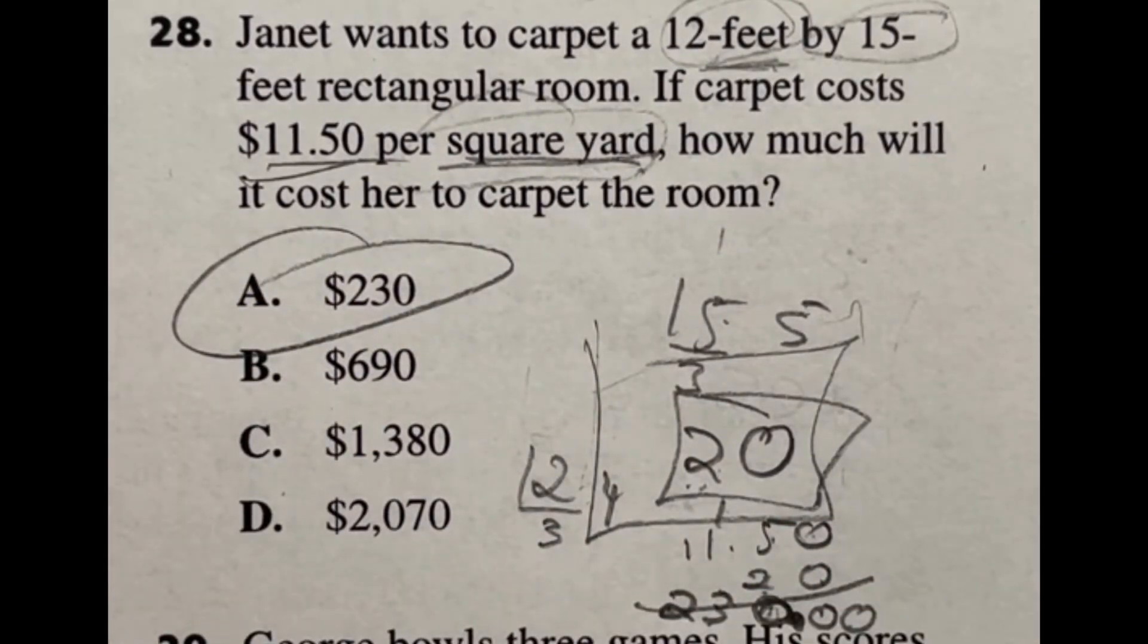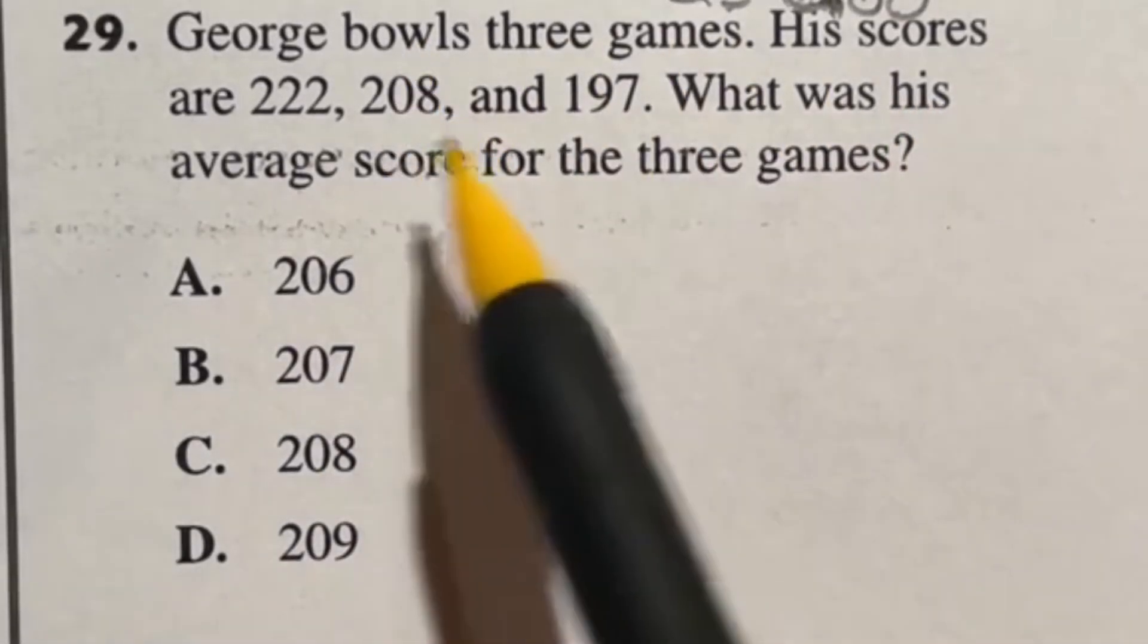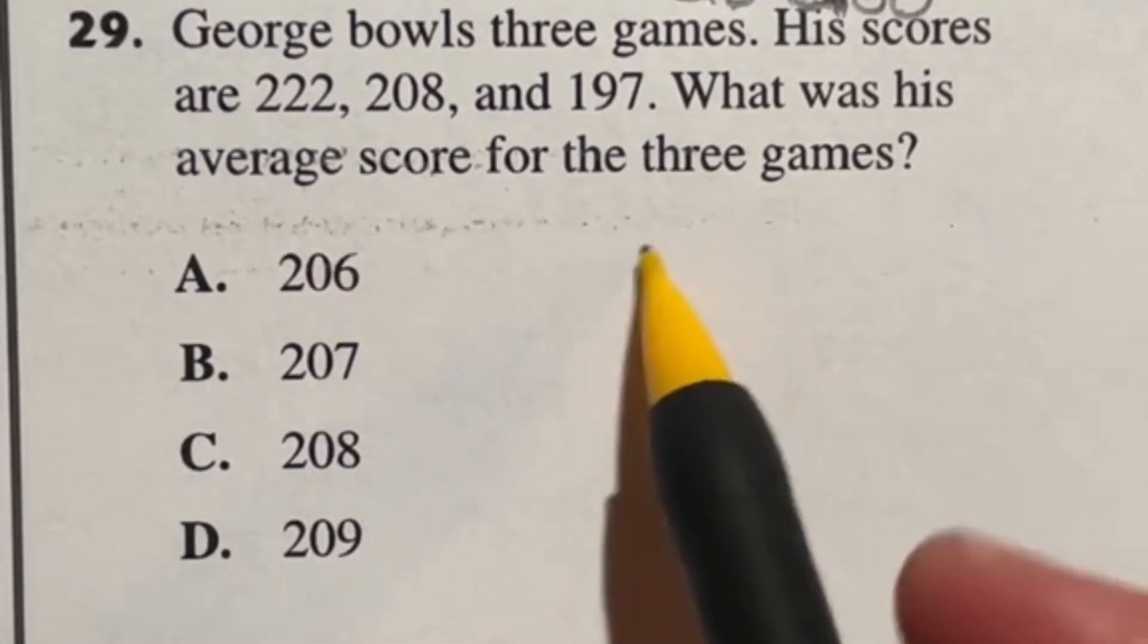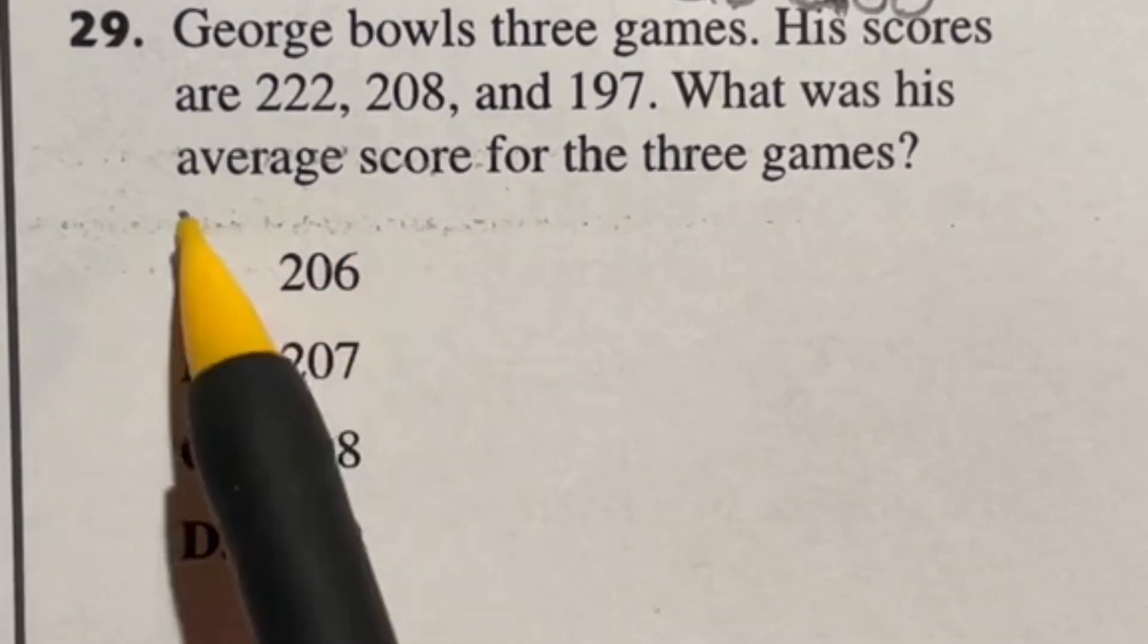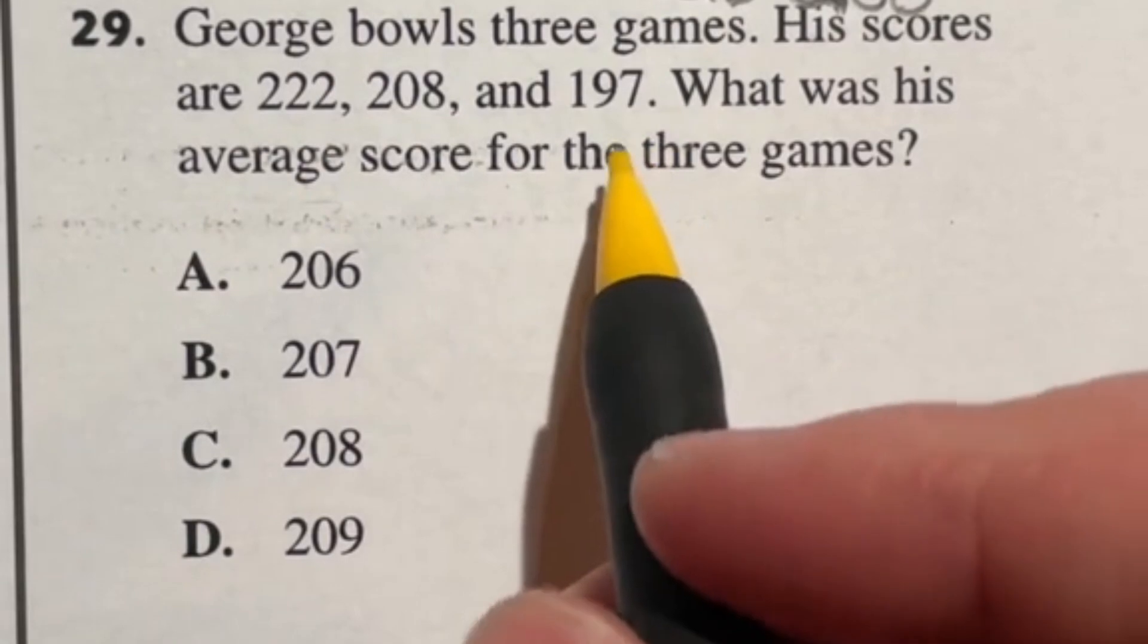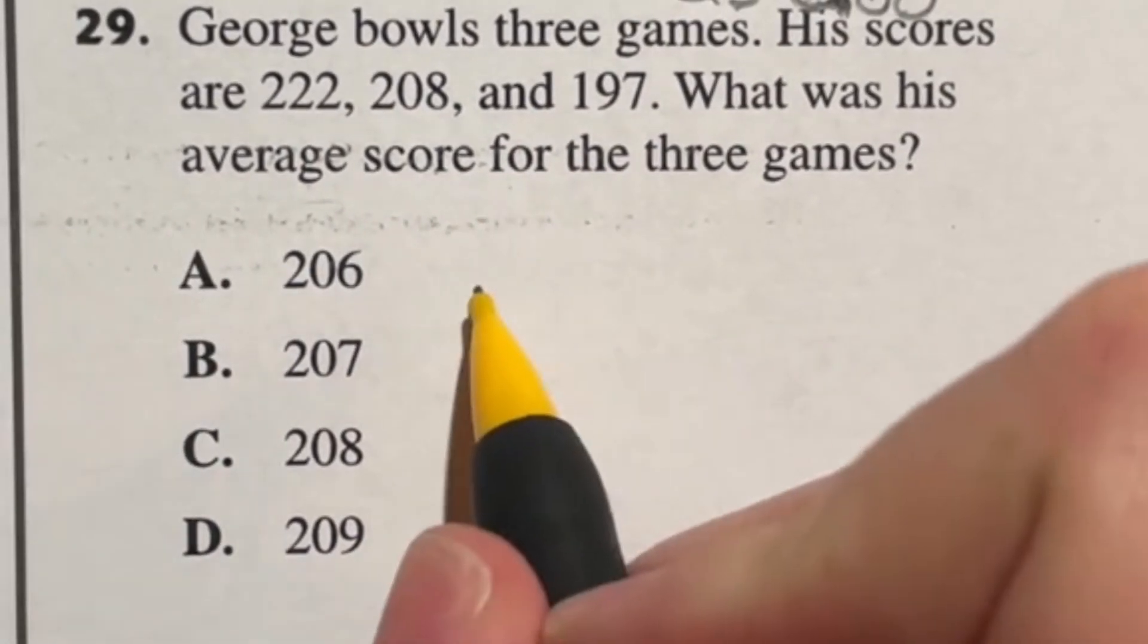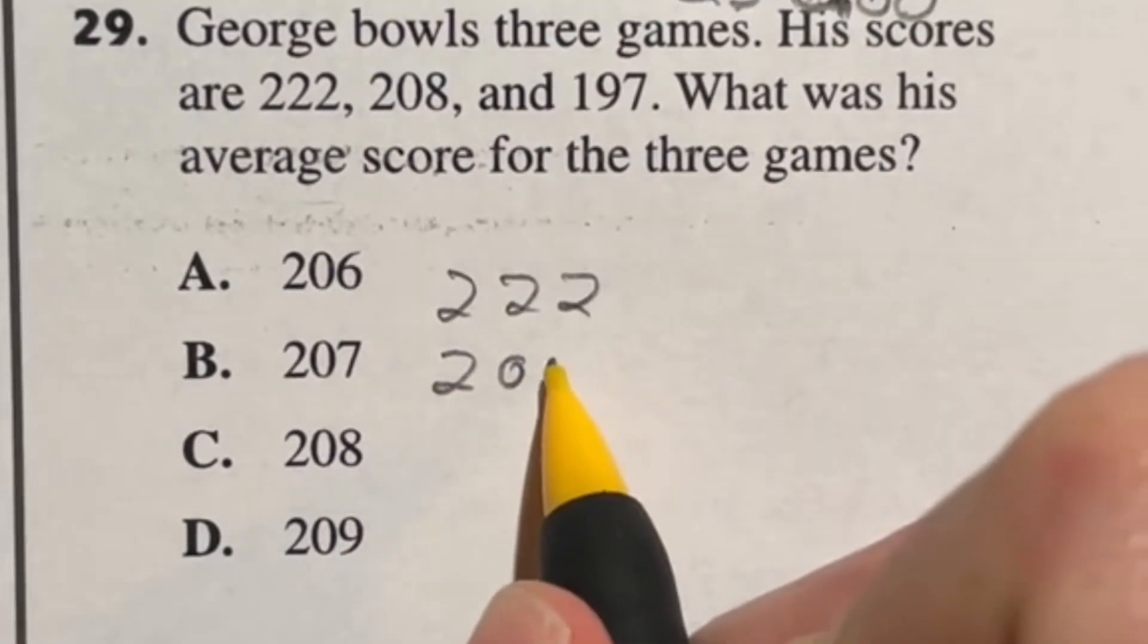Number 29 says George bowls three games. His scores are 222, 208, and 197. What was his average score for the three games? Remember, average is one of our three measures of center—mean, median, mode. Average is the mean. This is where you add your numbers together and then divide by how many numbers you have. There's other tricks that may make you move faster through this, but let's go through the old-fashioned way of adding the three together and then dividing by three.